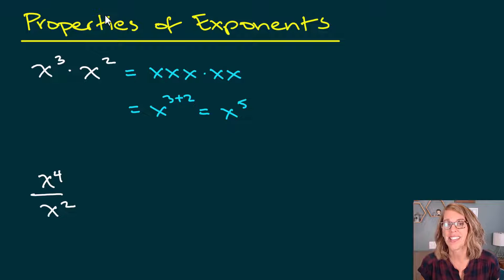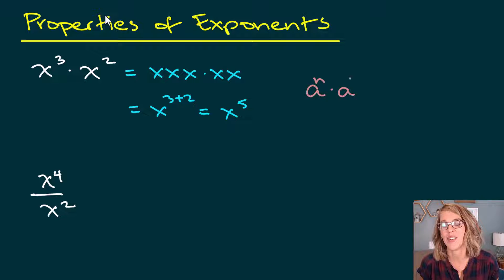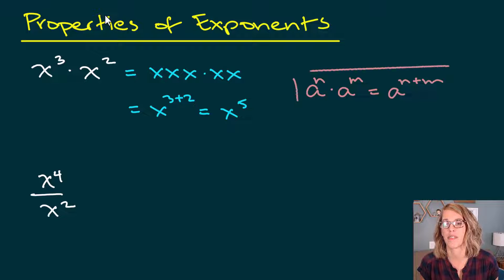So as a property, this one says that a to the n times a to the m — if the bases are the same — you can add up those exponents. So there's our first property.